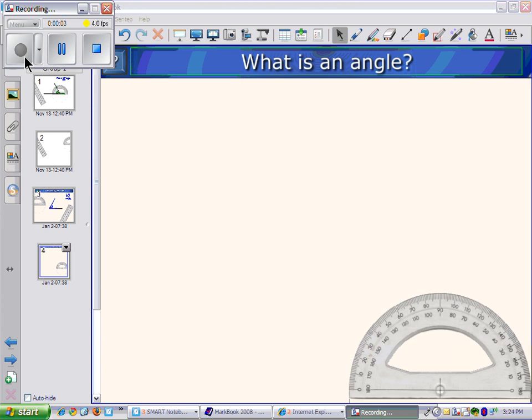What is an angle? An angle is formed when two lines meet at an endpoint.